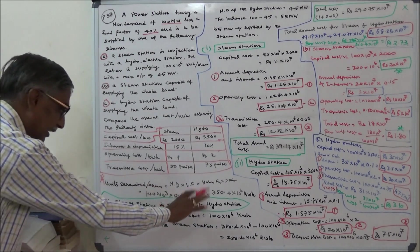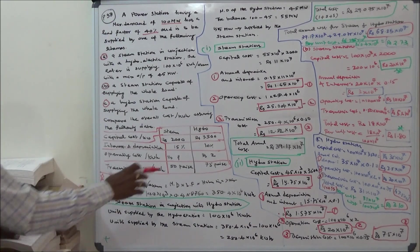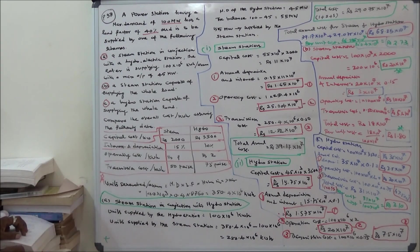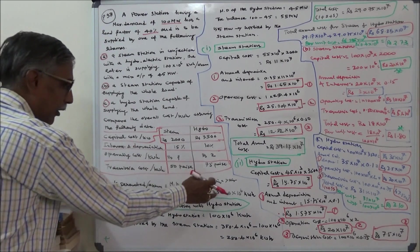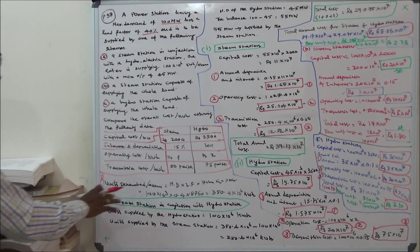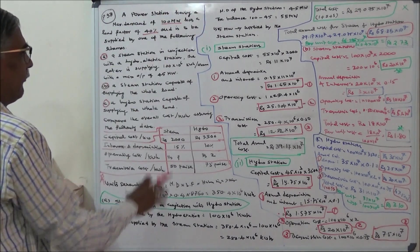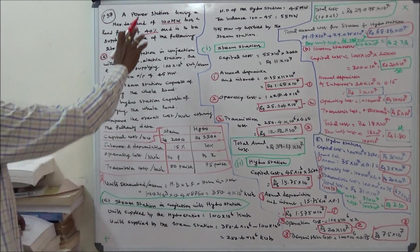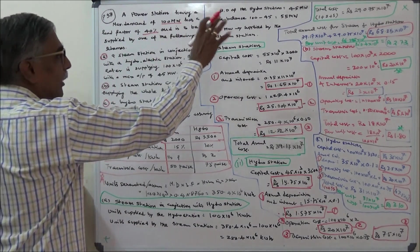Scheme A: Steam station in conjunction with the hydroelectric station. Units supplied by the hydro station is given as 100 into 10 power 6 kilowatt hour per annum. Total units generated per annum is 350.4 into 10 power 6 kilowatt hours. Therefore, units supplied by the steam station is 350.4 into 10 power 6 minus 100 into 10 power 6, equal to 250.4 into 10 power 6 kilowatt hour. Maximum demand of the hydro station is 45 megawatts, so steam station supplies 100 minus 45 equals 55 megawatts.